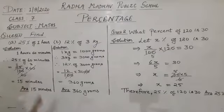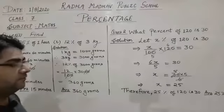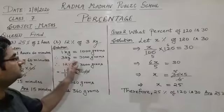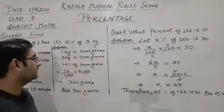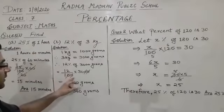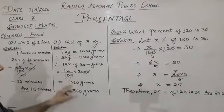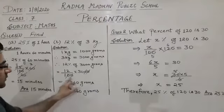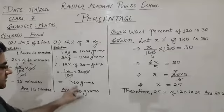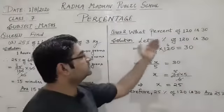Now 60 is also divisible by 20: 3 twenties are 60, so 5 threes are 15. The answer is 15 minutes. Next question: 12% of 3 kg. We know that 1 kg is equal to 1000 grams, so 3 kg is equal to 3000 grams. We will find 12% of 3000 grams: 12 upon 100 into 3000. Canceling a zero, we get 12 into 30, which equals 360 grams.